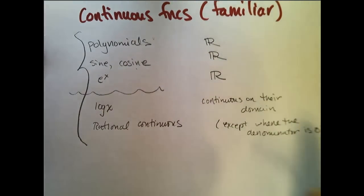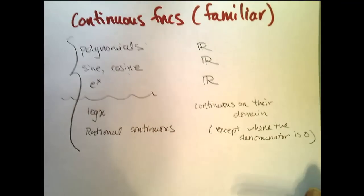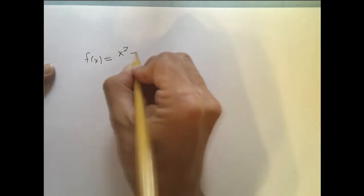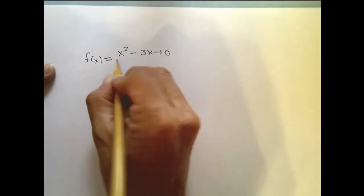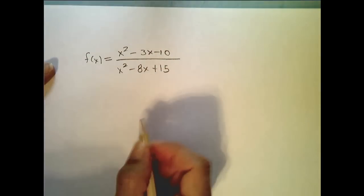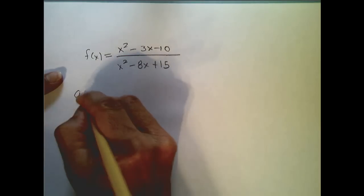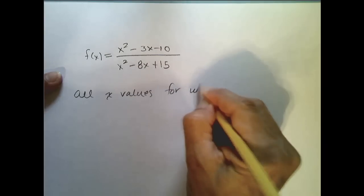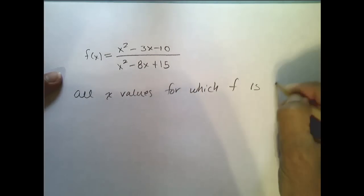Now, let's look at how we might be able to determine continuity of an equation. If I gave you this function, f of x equals x squared minus 3x minus 10 all over x squared minus 8x plus 15, and I said, what are all x values for which f is continuous?